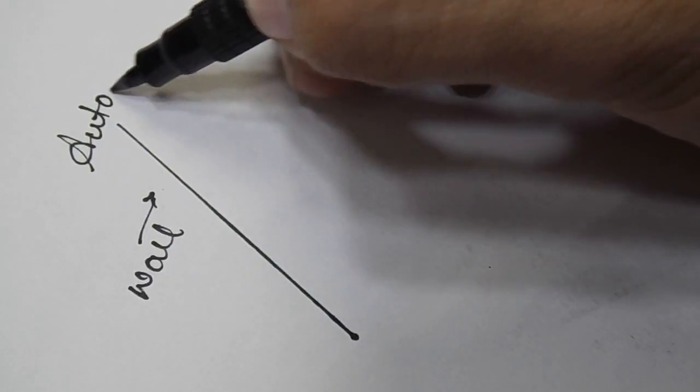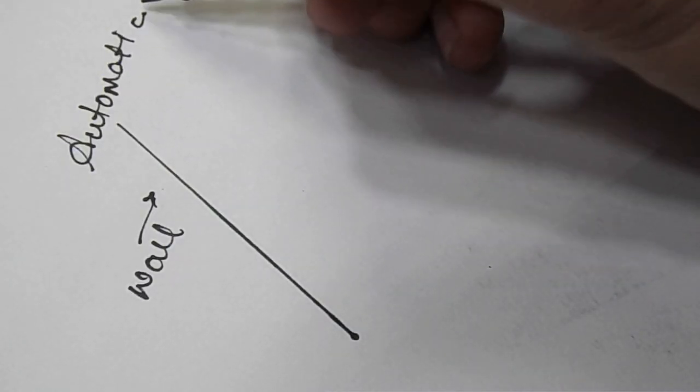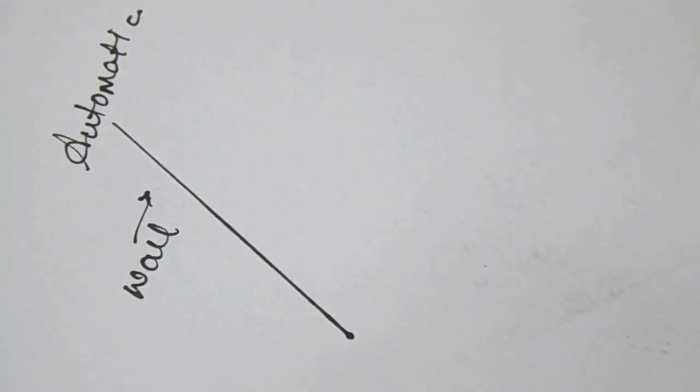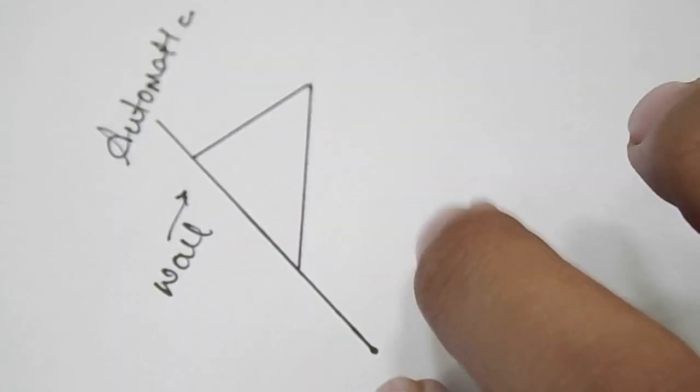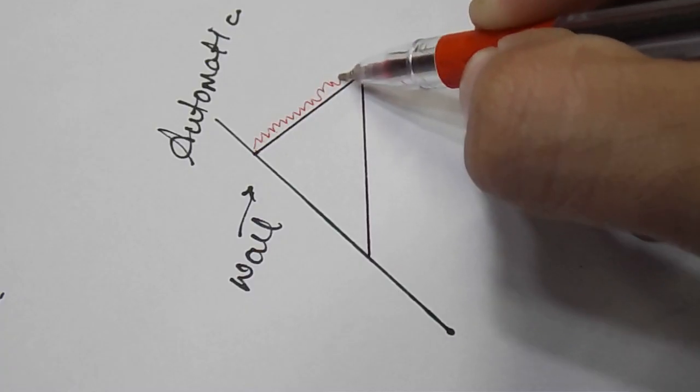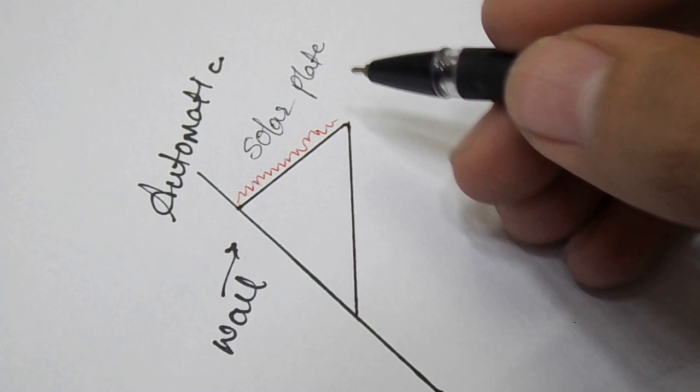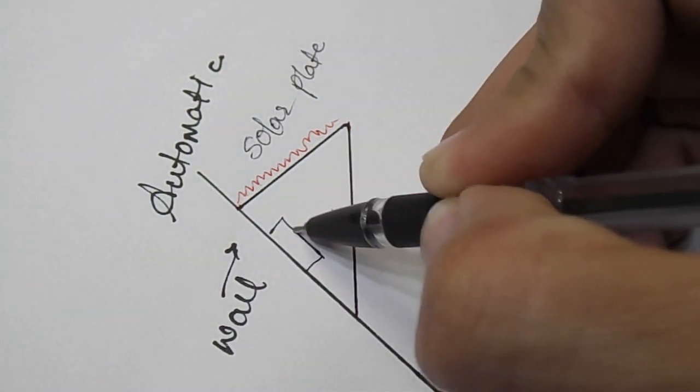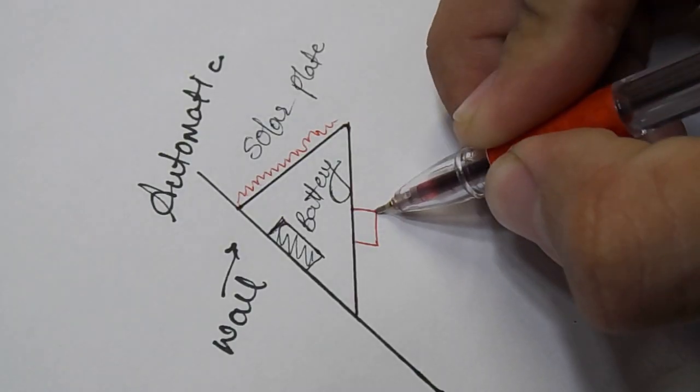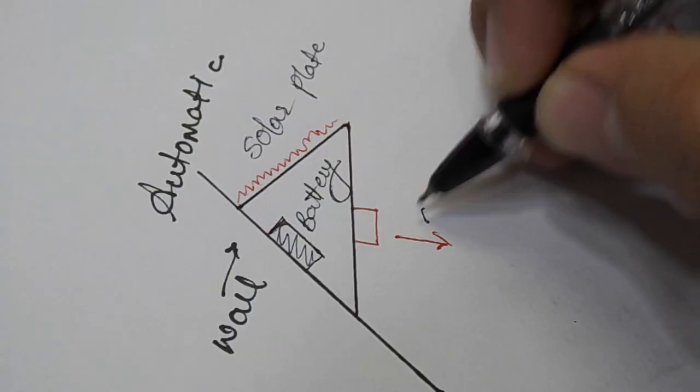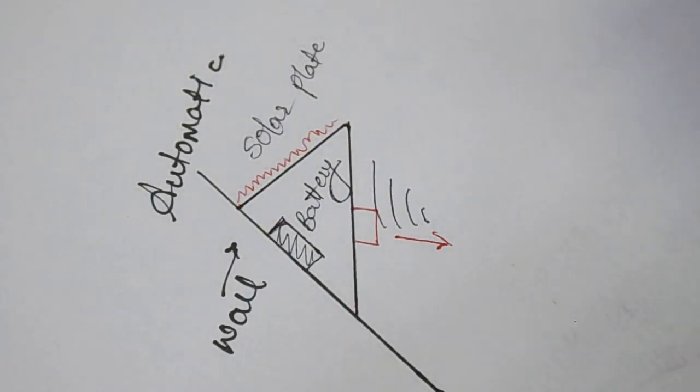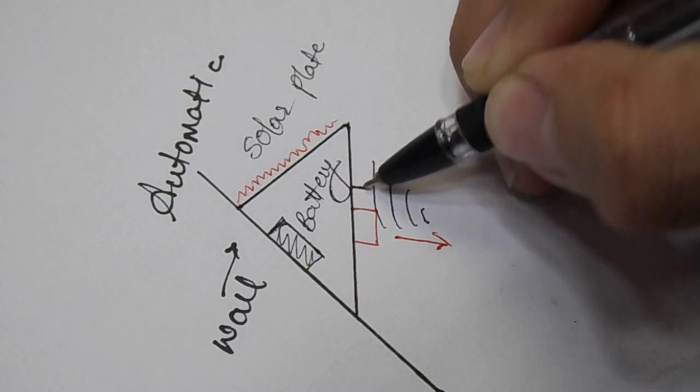Let's say that you want wall light outside your home that should be automatic. Then we will need an assembly like this. At the top of the assembly we will have our solar plate which charges the internal battery. At the bottom side we want a sensor that detects objects, and on the top of the side panel we will have our LED strip.